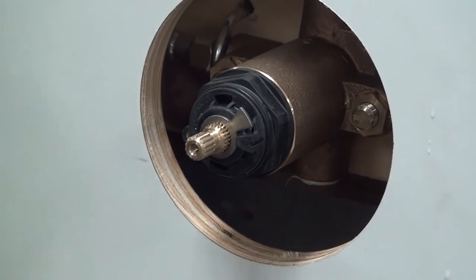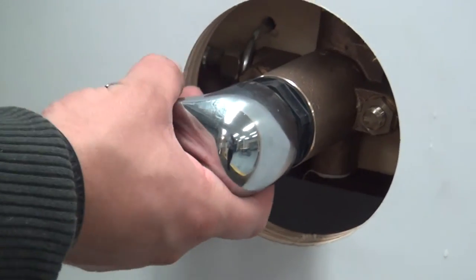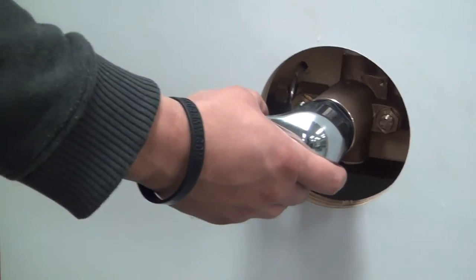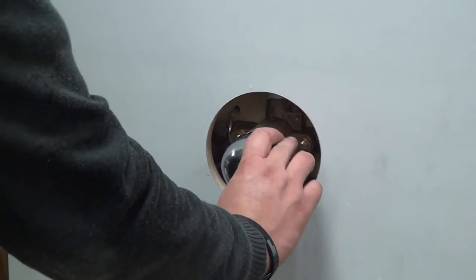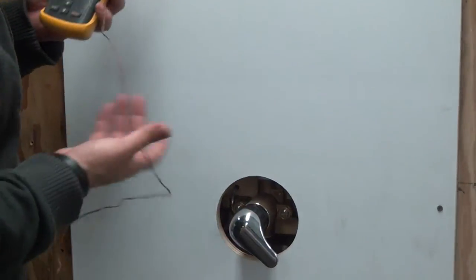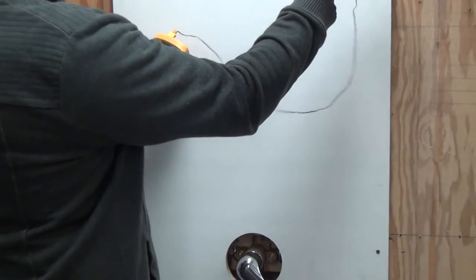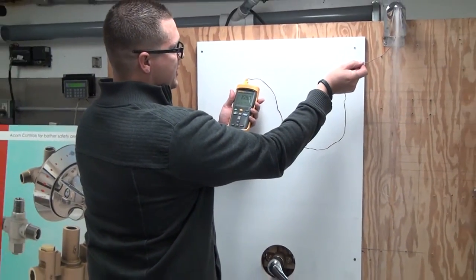Once the off stop has been installed, rotate the handle counterclockwise to find your desired temperature. Using your temperature measuring device, measure the temperature of the water and set your stop to your desired temperature.